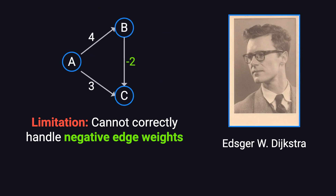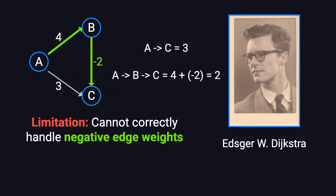Let's go through an example. Imagine we have a graph where the distance from A to B is 4, A to C is 3, and B to C is minus 2. If we use Dijkstra's algorithm, it will first determine that the shortest path from A to C is 3 and never reconsider it. But if we take the path from A to B to C, the total distance would be 4 plus negative 2, which equals 2 — actually shorter. Dijkstra's algorithm won't find this, because it locks in the first shortest path it discovers and never looks back.